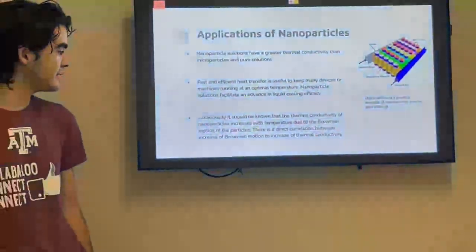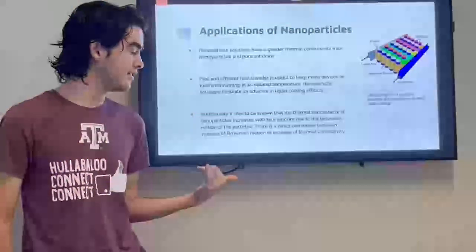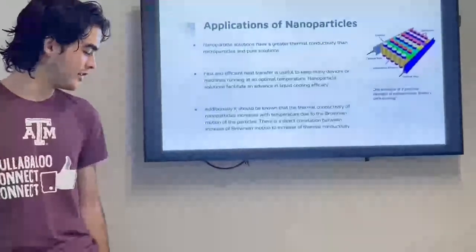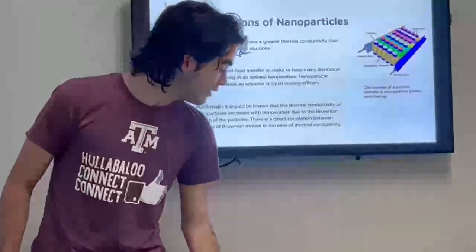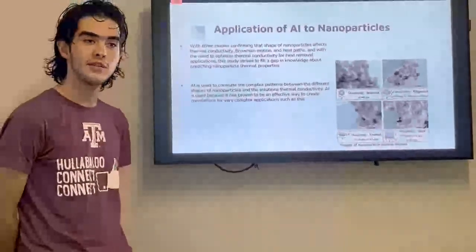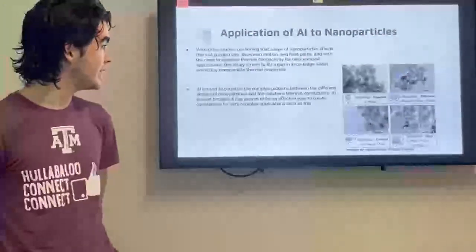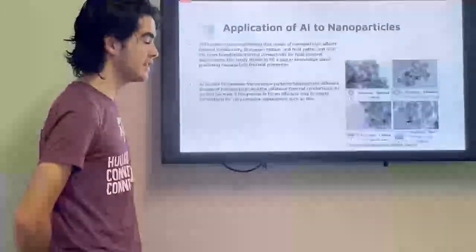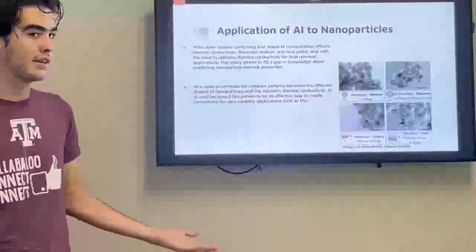Additionally, it should be known that there is a correlation between the Brownian motion and thermal conductivity. The more Brownian motion there is in nanoparticle solution, the higher thermal conductivity there is. Knowing this, the researchers decided to study how the shape would affect the thermal conductivity because, as they found out from other studies, the shape does have an effect on Brownian motion and it also creates different heat paths which will overall affect the thermal conductivity.